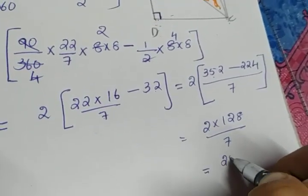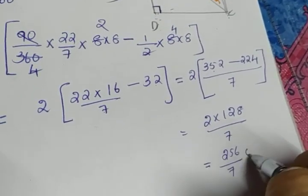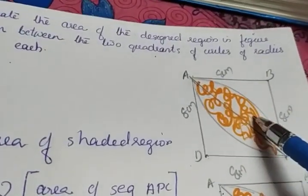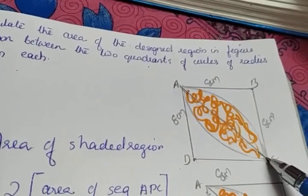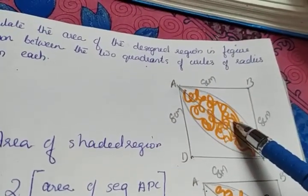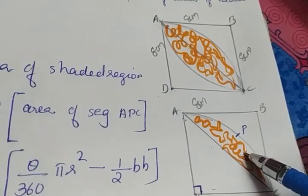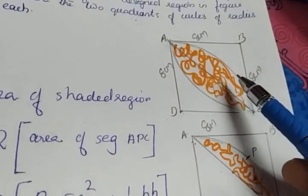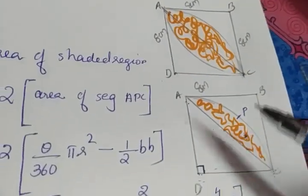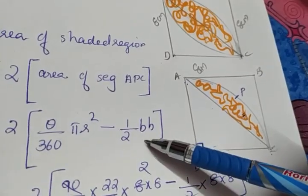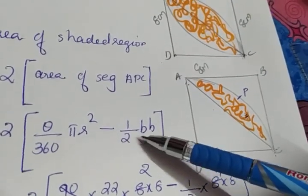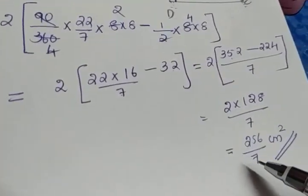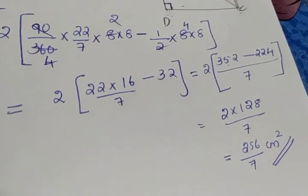The answer is 256/7 centimetre square. To summarize: instead of finding the full area directly, we joined AC to divide the designed region into two equal halves, calculated the segment's area using the formula — area of sector minus area of triangle — with base and height both equal to the radius 8 cm, then multiplied by 2 to get the full area: 256/7 cm².